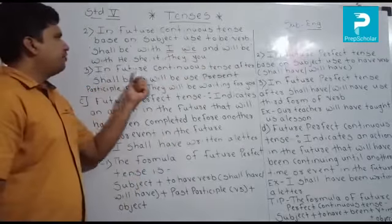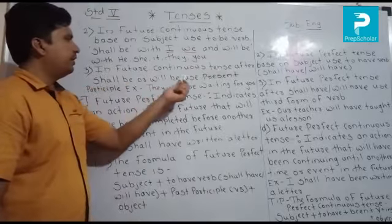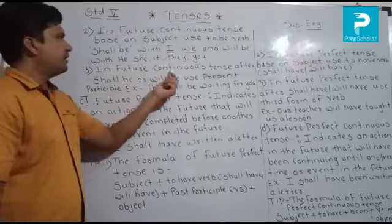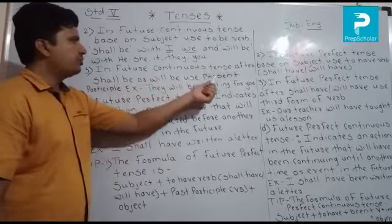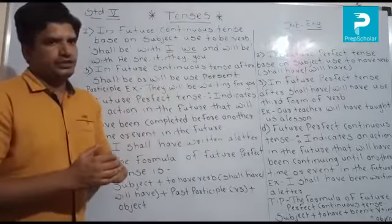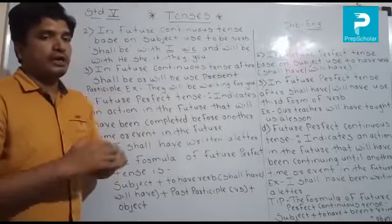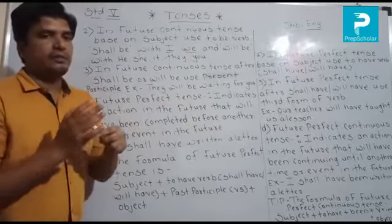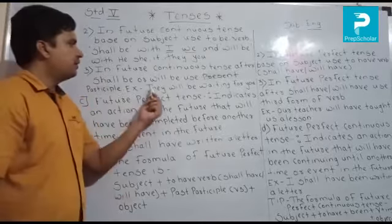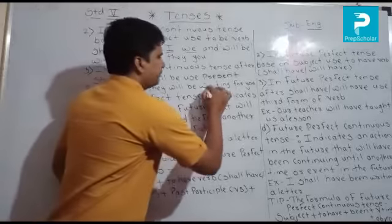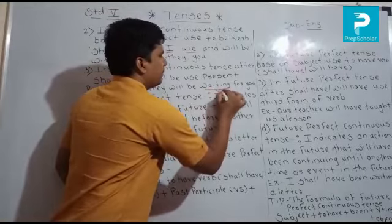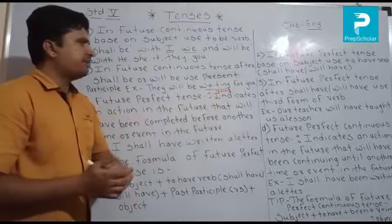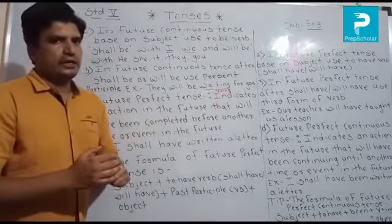Tip number three: in future continuous tense, after shall be or will be, use the present participle — that is, V+ing. For example: they will be waiting for you. Here, 'waiting' is V+ing. So after shall be or will be, we use the present participle in future continuous tense.